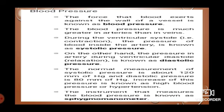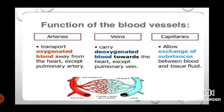The normal measurement of systolic pressure is about 120 mm of mercury and diastolic pressure is 80 mm of mercury. An increase in this pressure is known as high blood pressure or hypertension. The instrument used to measure blood pressure is known as a sphygmomanometer.